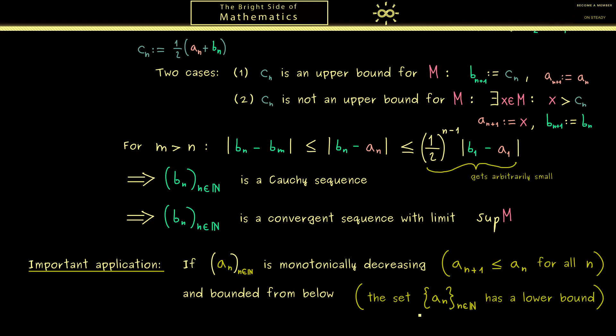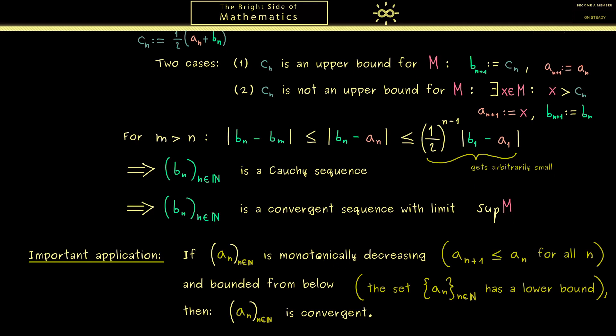And if the sequence is also bounded from below, which simply means that the set given by the sequence members has a lower bound. Then we can finally conclude that the sequence is indeed a convergent sequence. There you see this is a very useful criterion because you only have to check two properties.